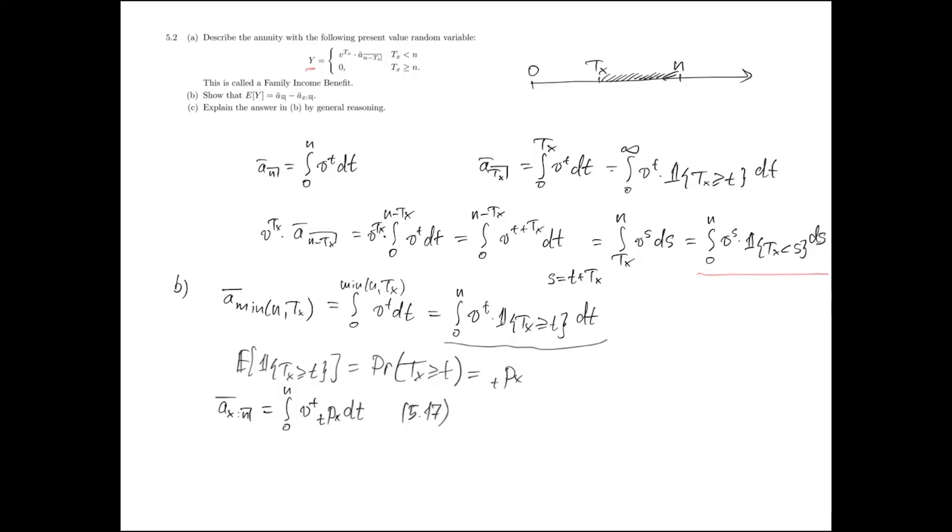we can apply the same indicator variable approach to obtain that the expected present value of annuity y is actually an integral from 0 to n v^t, but in this case tqx dt.